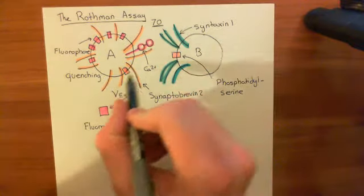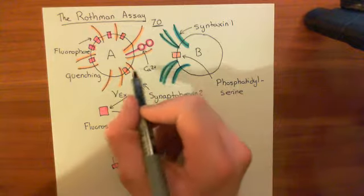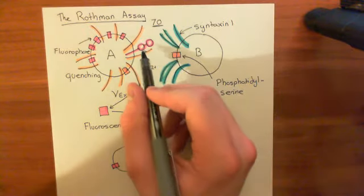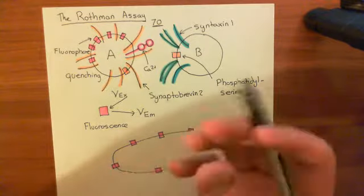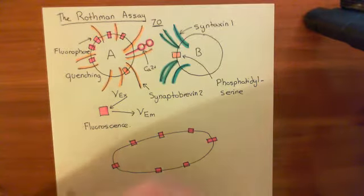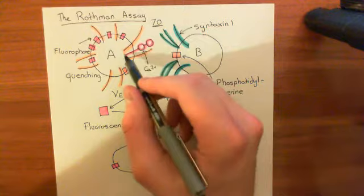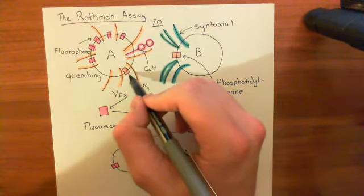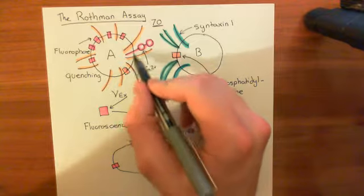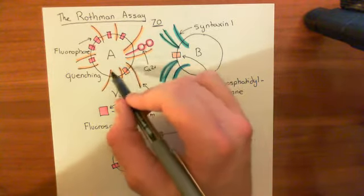Now, what we're going to do is we're going to put phosphatidylserine in both membranes. We're going to add calcium, and they're not going to fuse. Why? Or at least fusion will be greatly reduced. Why? Well, it's because the synaptotagmin molecule actually is capable of binding to the phosphatidylserine that's in the same membrane as it, basically.